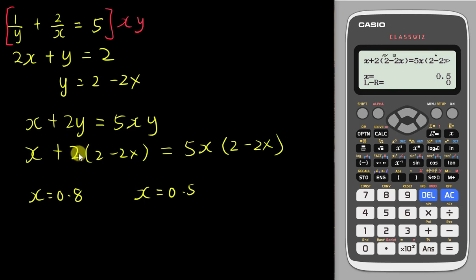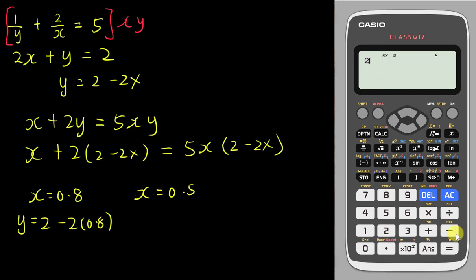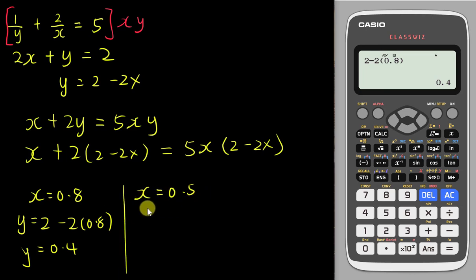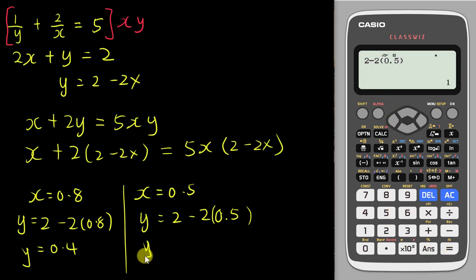Make sure you always change the reciprocal equation into linear or quadratic form before typing it into the Casio calculator. To find y, substitute x = 0.8 into y = 2 minus 2x: type 2 minus 2 times 0.8 — the calculator gives 0.4, so y = 0.4. For x = 0.5, use the back button and change 0.8 to 0.5 then press equal — the calculator gives y = 1.